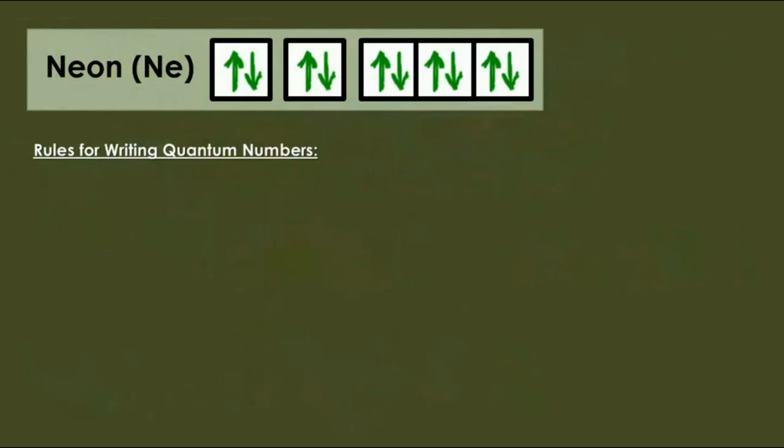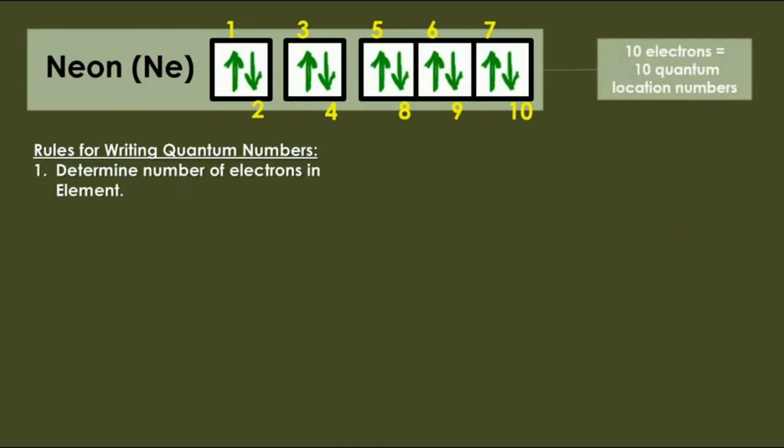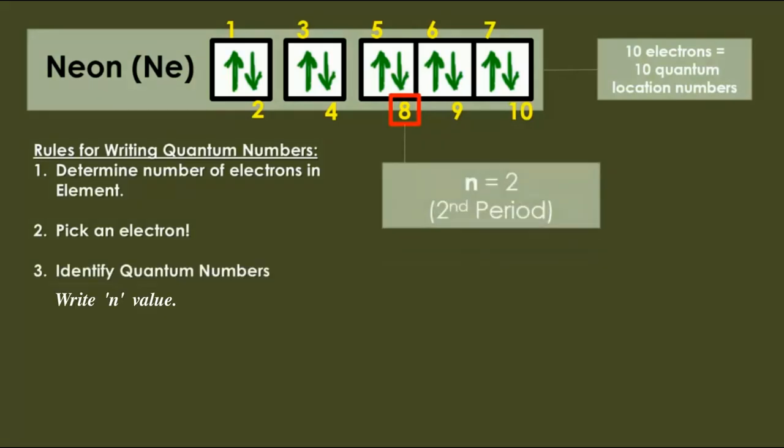Look all the values. Now we are going to write quantum numbers of one electron. Look here, that is neon. Neon is having 10 electrons, that means each electron has four quantum location numbers. Suppose let us take one electron and write the quantum numbers. Look here, we are taking eighth electron.